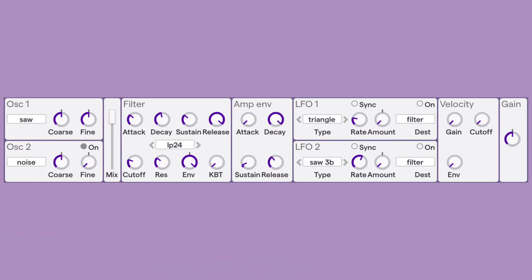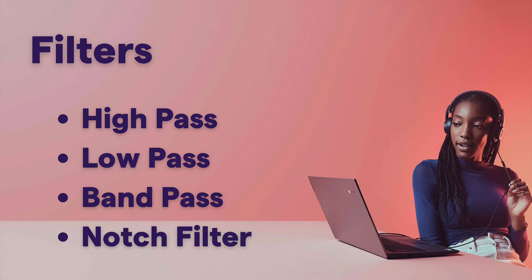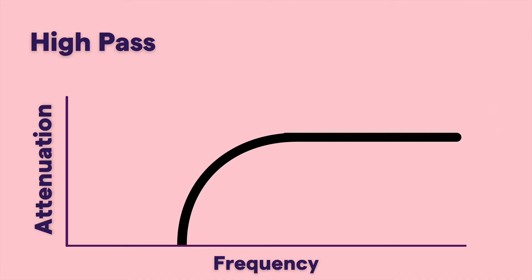The four main types of filters are high-pass, low-pass, band-pass, and notch filters. A high-pass filter — notice the x-axis is frequency, with the lowest frequencies on the far left and the highest on the far right. This filter, as the name suggests, allows the high frequencies to pass through, but it cuts the low frequencies.